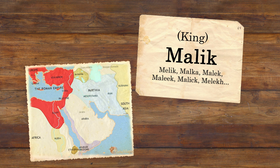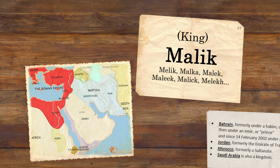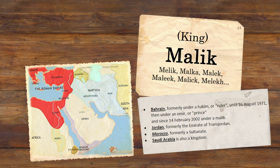This title was most common in the Middle East before the Middle Ages, but in relatively recent times a few nations have changed their ruler's title to Malik, as a title equated to the rank of king in the Western world. Bahrain for example was formerly under a Hakim until 1971, then under an Emir, and in 2002 they changed the title for their ruler to Malik. Other Maliks include the ruler of Jordan, which was formerly an Emirate, Morocco who was formerly a Sultanate, and Saudi Arabia is also classed as a Kingdom.